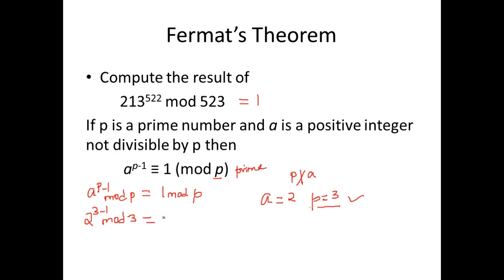This is equal to 1 mod 3. So what is 2 power 3 minus 1 mod 3? It is nothing but 2 square mod 3, or we can say 4 mod 3 is equal to 1 mod 3. What is 4 mod 3? Remainder is 1. What is 1 mod 3? It is 1. So this holds.